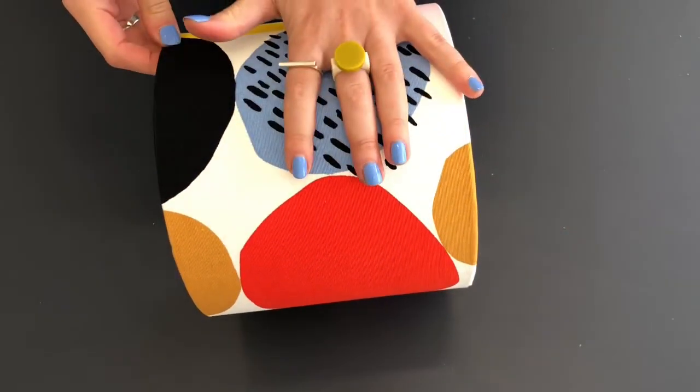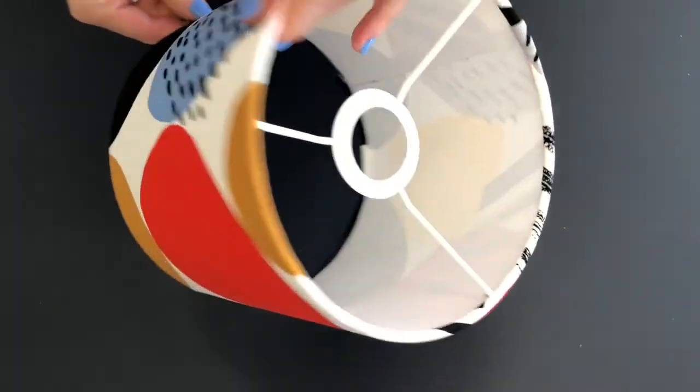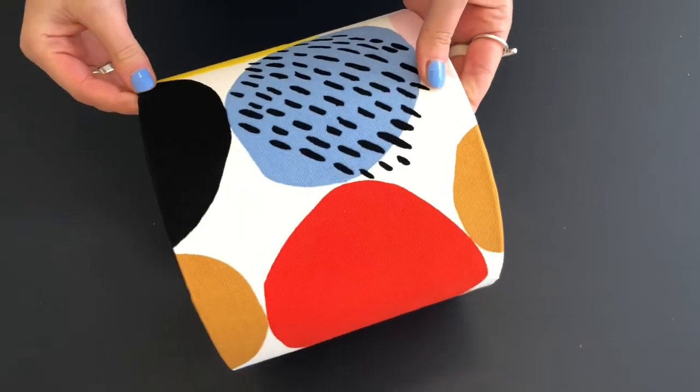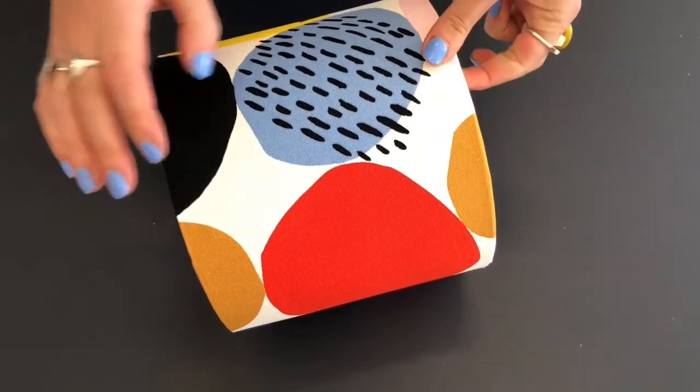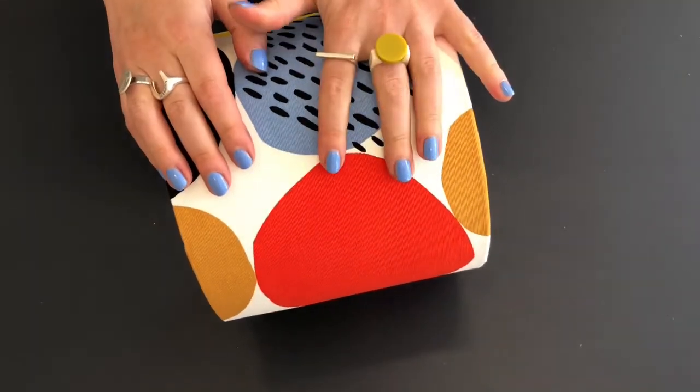And there you have it, there is your finished 20cm shade and they're super easy to do and not expensive either. If you want to buy another 20cm kit to make another shade then we have them for sale over in the shop on our website.